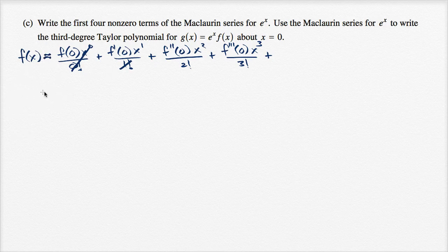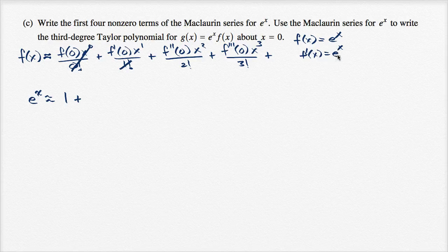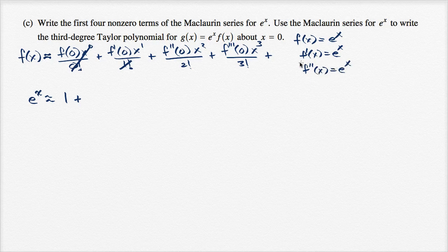So, let's do it for e to the x. e to the x is approximately equal to — well, it's e to the zero, which is one. You might already know that if f(x) = e^x, then f prime of x is also equal to e^x. That's one of the magical things about e to the x — the slope of the tangent line at any point equals the value. And if you take the second or third derivative, you can take as many derivatives as you want and still get e to the x.